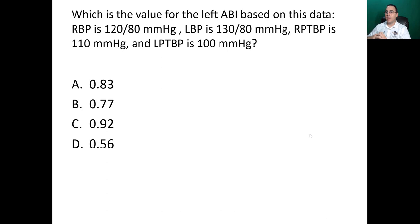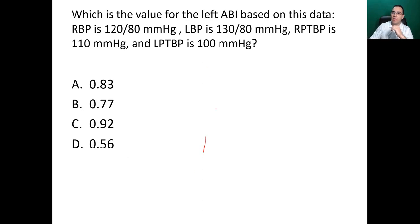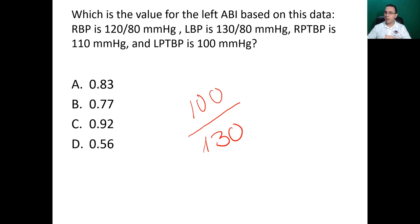Which is the value for the left ABI based on this data? Right brachial pressure is 120/80 mmHg, left brachial is 130/80, right posterior tibial is 110, and left posterior tibial is 100. To calculate the ABI, use the highest brachial pressure as reference — that is 130. Then use the left posterior tibial pressure: 100 divided by 130 equals 0.77. Good job!